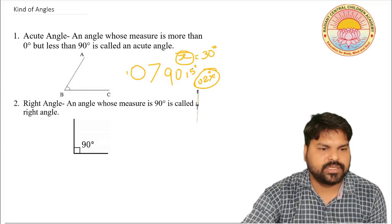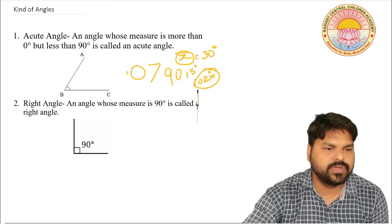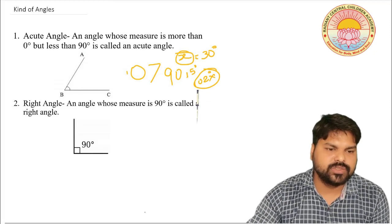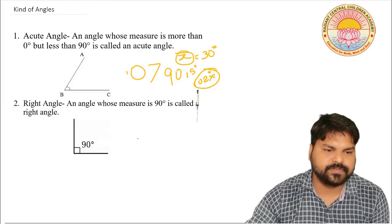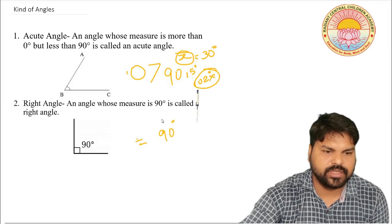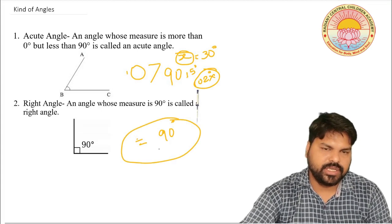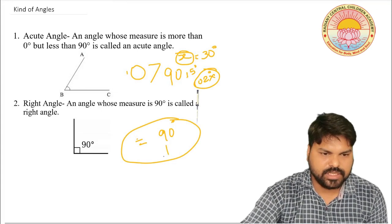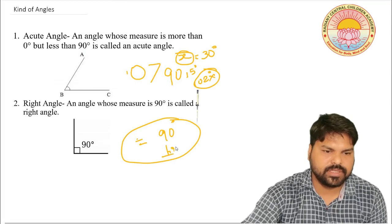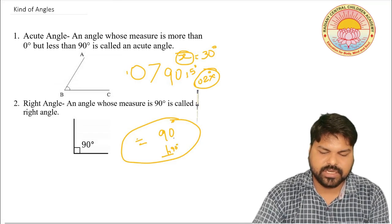The second angle is the right angle. As you know about the symbol of perpendicular, an angle whose measure is exactly 90 degrees is called a right angle. This angle is exact — it is 90 degrees. This is the symbol of perpendicular, and here the angle is 90 degrees. We call it a right angle.